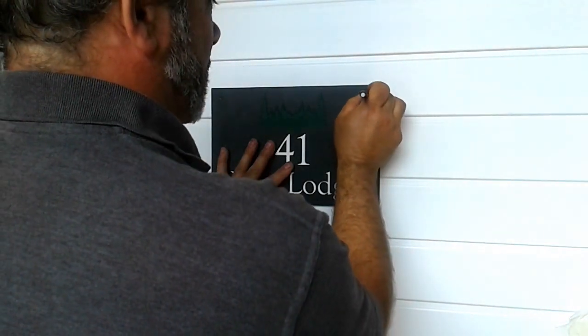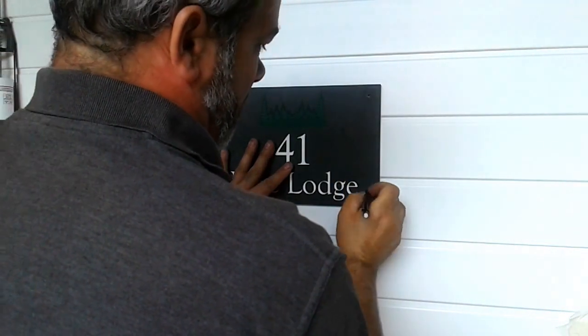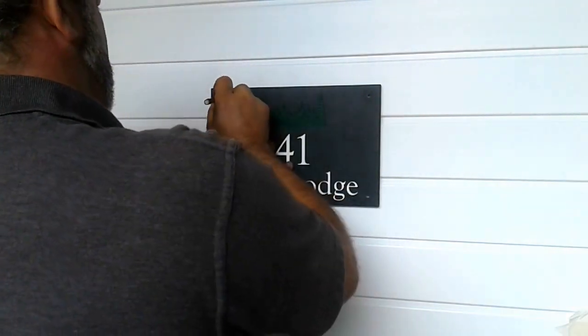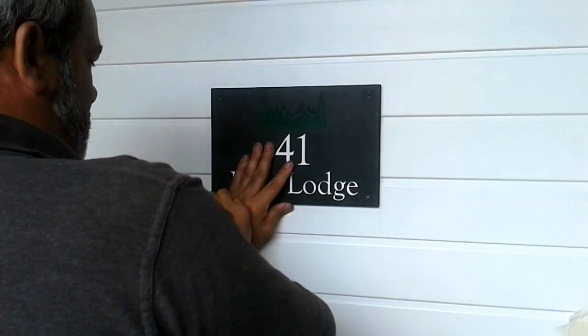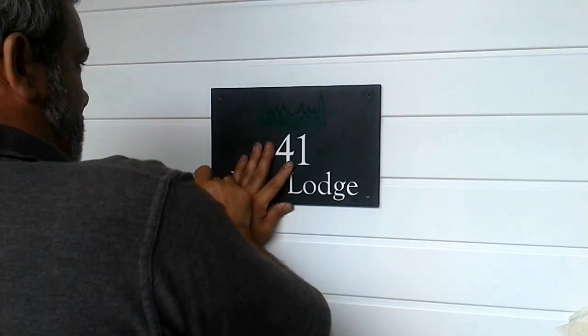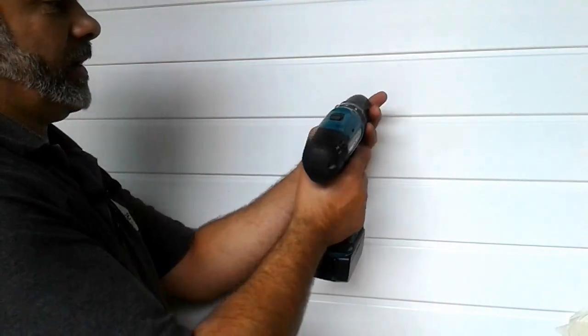Once you've got it where you want it, just mark through the holes either with a sharpie, a felt tip pen, or a pencil. Once your holes are marked on the wall, you need to drill them.